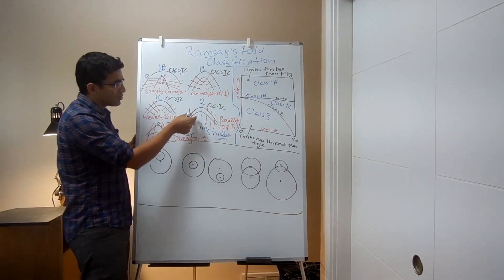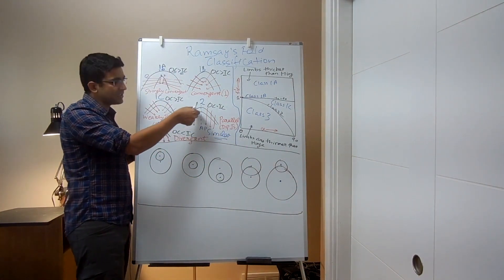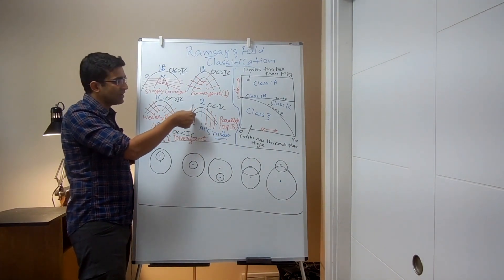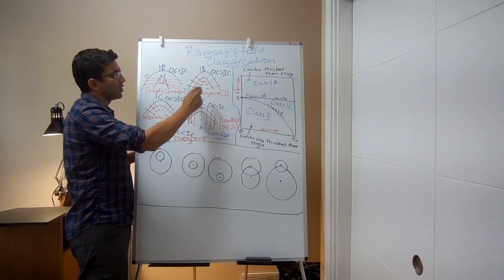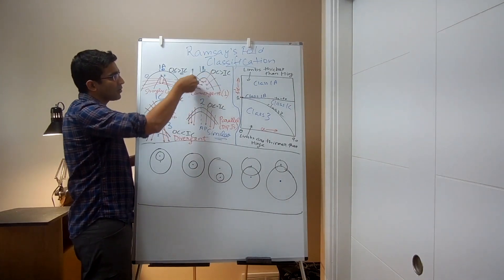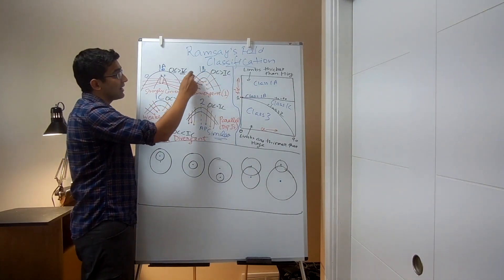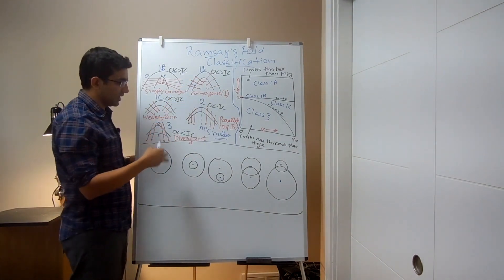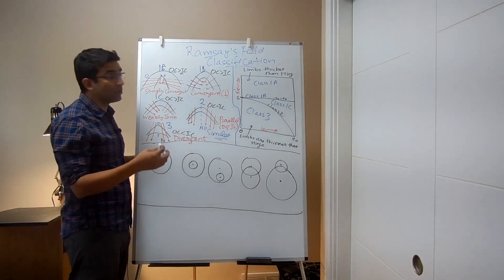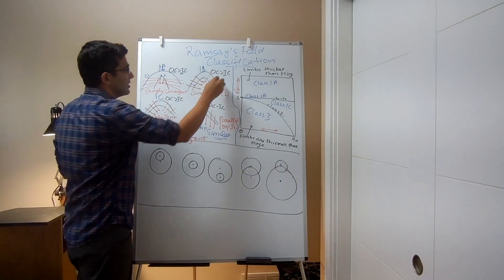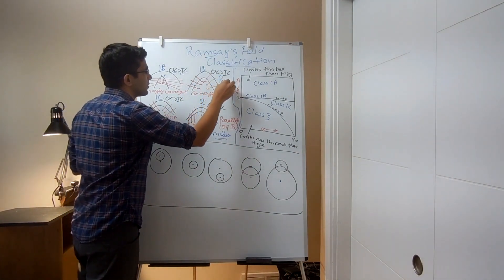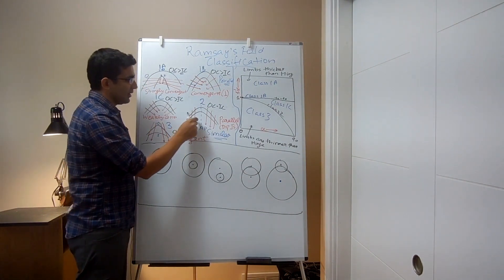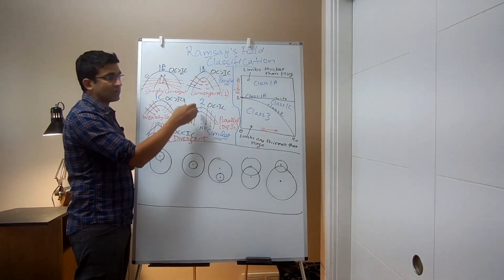We don't call class 2 parallel because the outer surface and inner surface are not parallel - the thickness is varying, becoming thinner towards the limbs and thicker towards the hinge. We call class 1b parallel because the thickness is constant everywhere and the outer and inner surfaces appear parallel to one another. In class 2, dip isogons are parallel to the axial plane, but the fold itself is not a parallel fold.